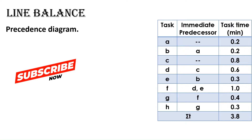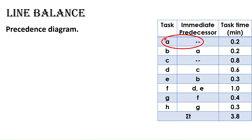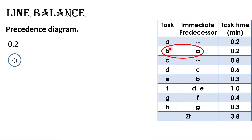Let us start with the first question to draw the precedence diagram for this data. The first task in the list is task A without any immediate predecessor. The precedence diagram starts from the left, so at the far left draw a node with the letter A inside. The duration of this task is 0.2 minutes, so write 0.2 above the node. The second task is task B and its immediate predecessor is task A, or task B is following task A. So, draw an arrow starting at A and pointing to the right. Then draw a node with the letter B inside and 0.2 above, as the duration of task B is 0.2 minutes.